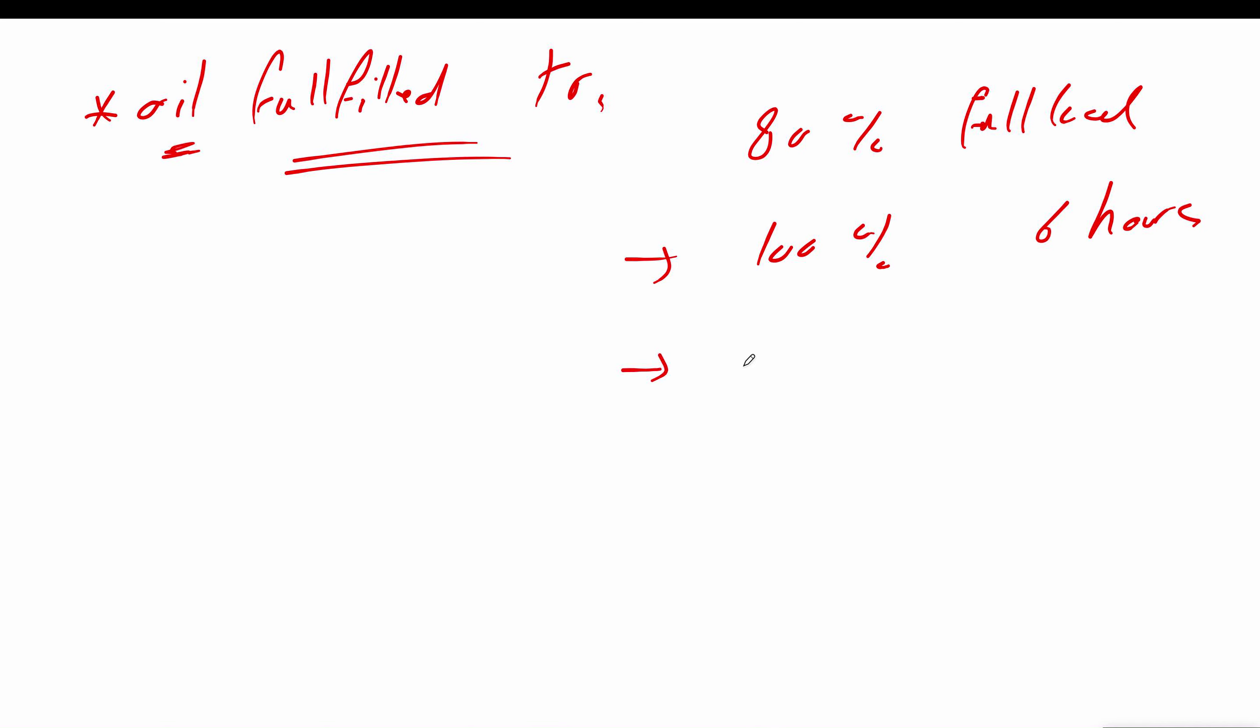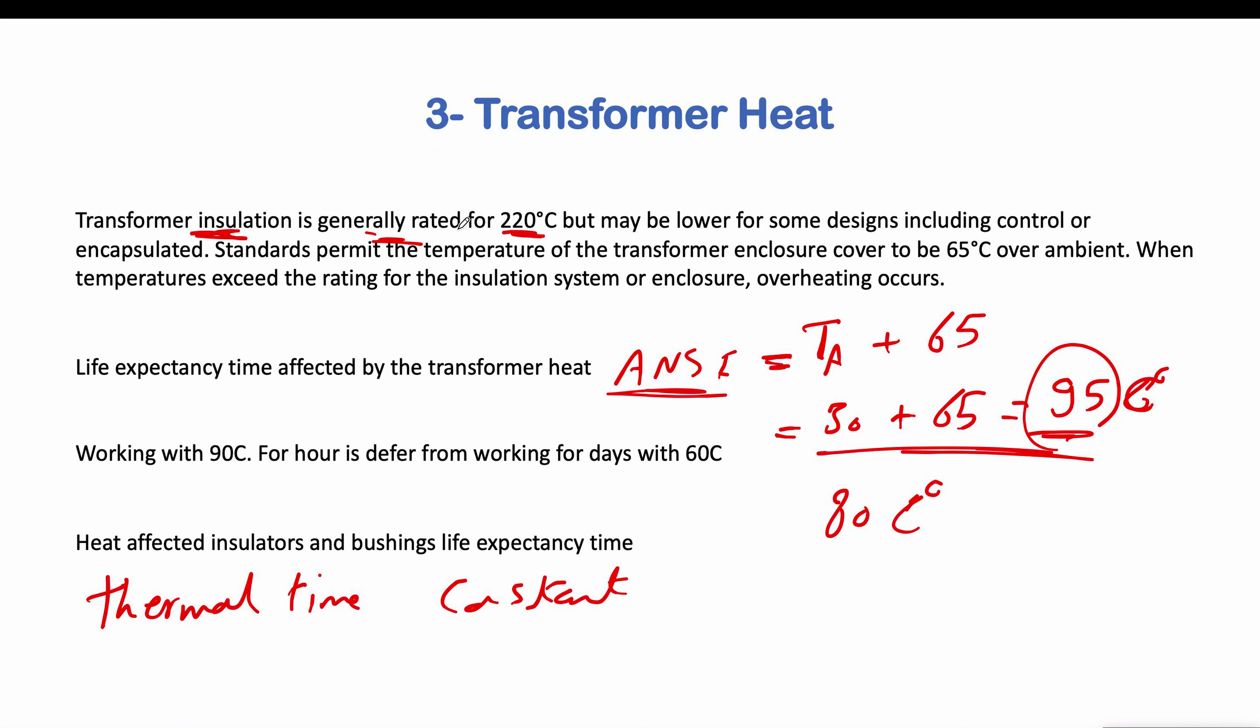And they can stand up with 110 percent for maybe four hours. And it can stand up with 120 percent for one hour. And this overload in which the transformer can stand up with is a consequence of a high thermal time constant of oil transformers.